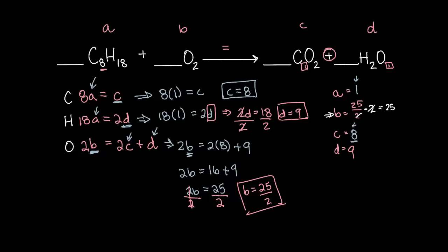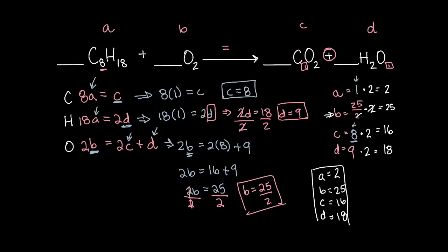Since we multiplied B by 2, we have to apply that same multiplication to every other variable. So A times 2 equals 2, C equals 8 times 2 equals 16, and D equals 9 times 2 equals 18. Written neatly: A equals 2, B equals 25, C equals 16, and D equals 18. Those are our coefficients.